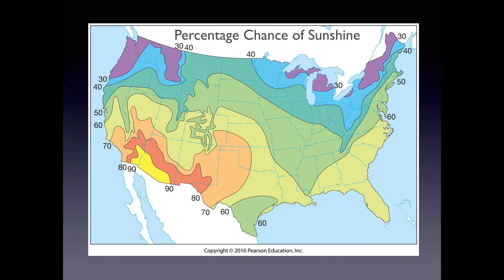Climate conditions can also be represented graphically. In this case, we have a map of the percent chance of sunshine, collected by looking at the number of clear days over a very large date range. We see that we have the most chance of sunny skies down in southern Arizona and the least chance of sunny skies up in upper Maine or in the Pacific Northwest. These are conditions gathered from data over a long period of time.